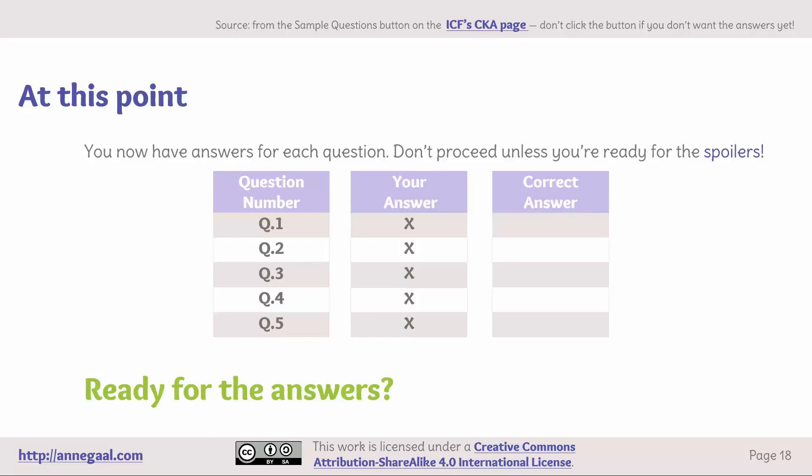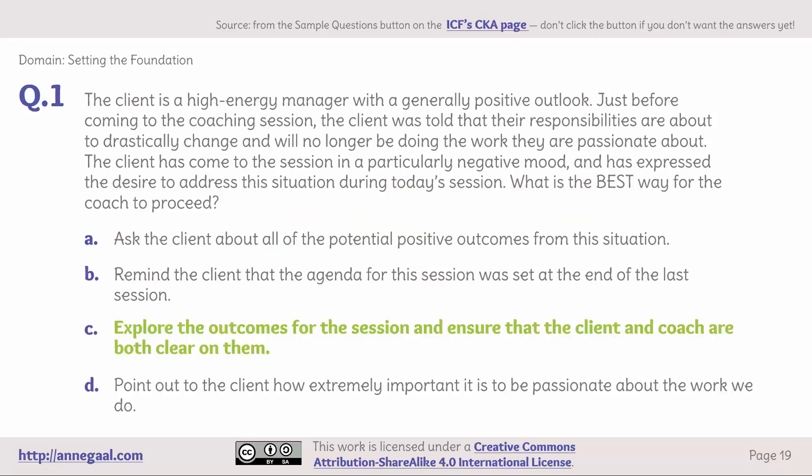At this point you should have an answer written down for each question. Don't proceed unless you're ready for the spoilers. If you're ready for the answers, here we go. Domain: setting the foundation. Question 1 — the client is a high-energy manager who received bad news just before the session and came in a negative mood. What is the best way for the coach to proceed? The answer is C: explore the outcomes for the session and ensure that the client and coach are both clear on them.